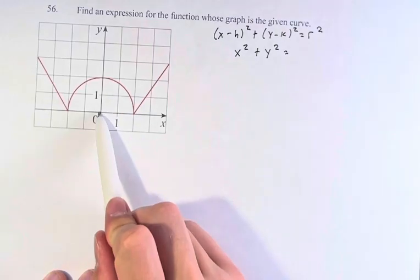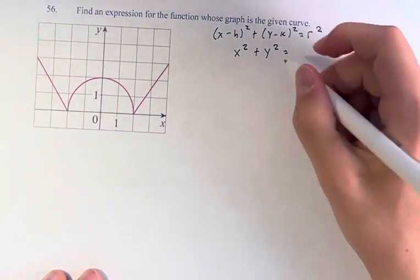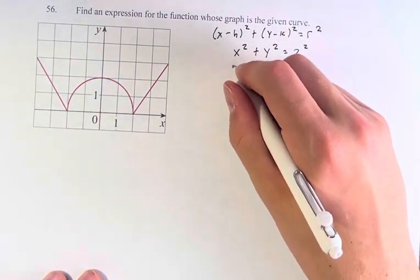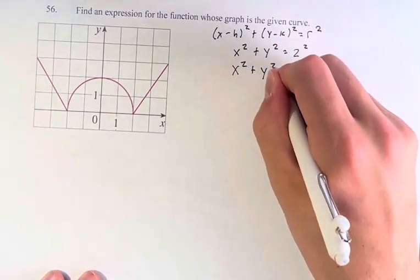The radius is the distance from the center to the edge, which is 2 units, so 2 squared, which is just 4. So I can just write that here, x² + y² = 4.